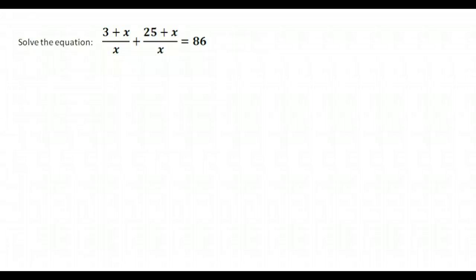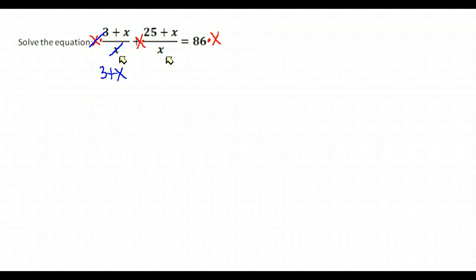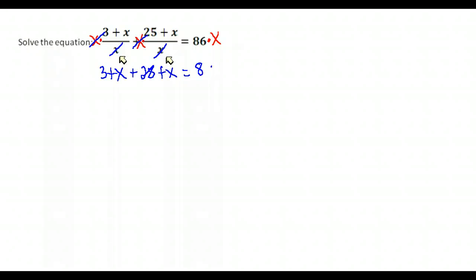This next one looks a little more complicated, but again just look and find your denominators. Both denominators are just the variable X, so to solve we're going to multiply each term by X to eliminate that denominator. X goes into X and cancels, so we have 3 plus X. Here X goes into X giving 1, so we have 25 plus X. Watch for the sign — it was a plus, so we distribute the positive. Over here we have 86X.